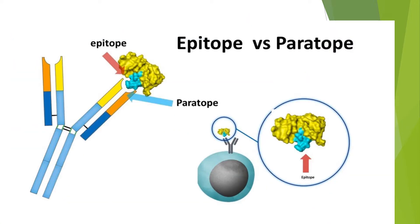Here you can see a picture showing what is epitope and paratope. This part is called epitope. When this part binds to the antibody at the binding site, it is called paratope. So you can see the differences between epitope and paratope.